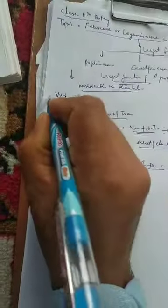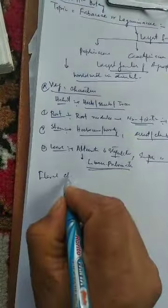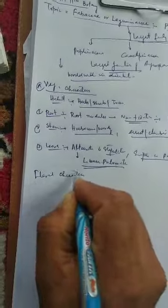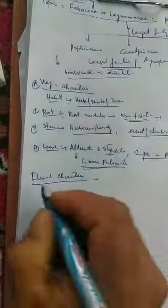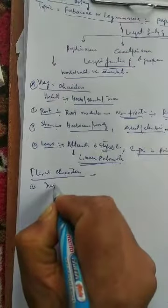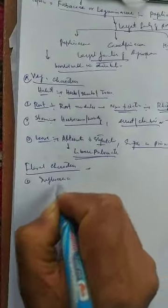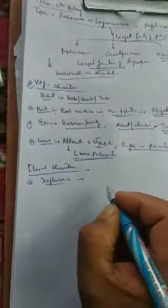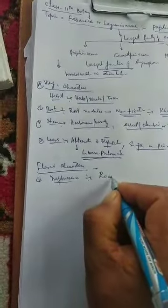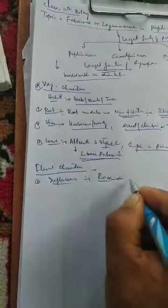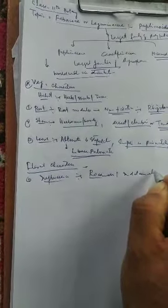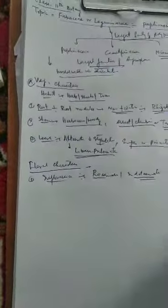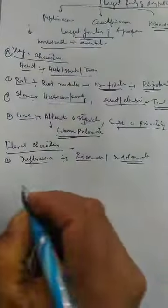Now we will take up the floral characters. In floral characters, first we take the inflorescence. The inflorescence is racemose, that is, indeterminate.